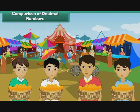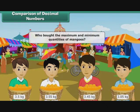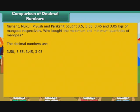Nishant, Mukul, Piyush and Parekshit bought 3.5, 3.55, 3.45 and 3.05 kgs of mangoes respectively. Who bought the maximum and minimum quantities of mangoes? Let us first arrange the decimal quantities in descending order, that is, the decreasing order of values. The decimal numbers are 3.5, 3.55, 3.45, 3.05. Let us rewrite the numbers so that all of them have the same number of digits after the decimal point: 3.50, 3.55, 3.45, 3.05.